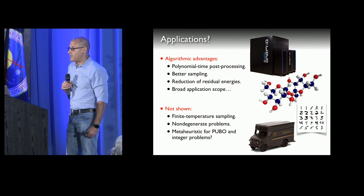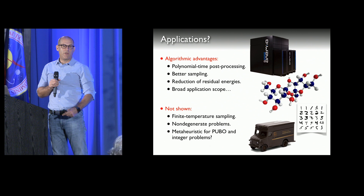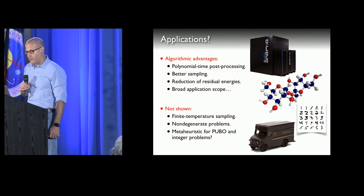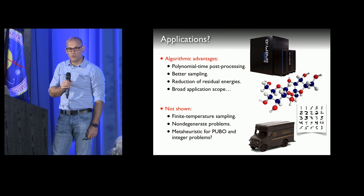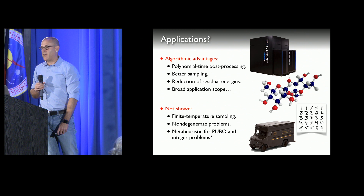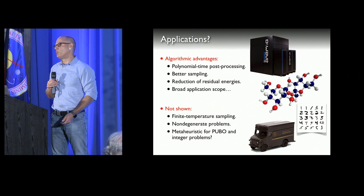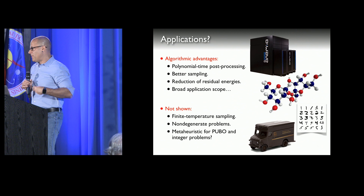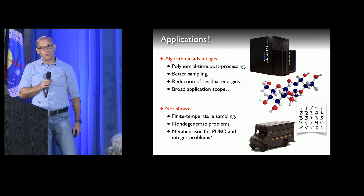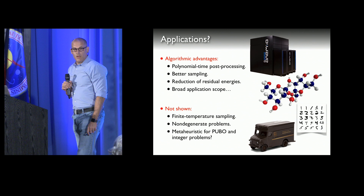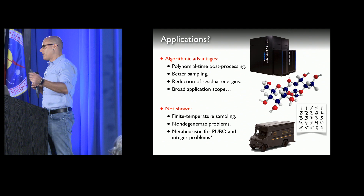Is this of any use? I would say yes. It's a polynomial-time post-processing, it gives you better sampling, you can use it to reduce residual energies, and it has a broad application scope — from the D-Wave to molecular similarity problems, to generating states for machine learning, or to including constraints. You can also do this at finite temperature: if you want to sample a Boltzmann distribution, you can look at problems with a unique solution, start with a multitude of excited states, and push down the residual energies. It's a very nice meta-heuristic for post-processing.